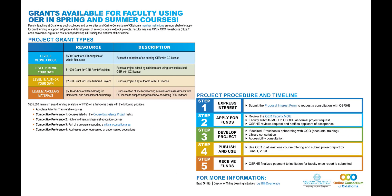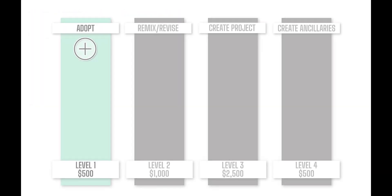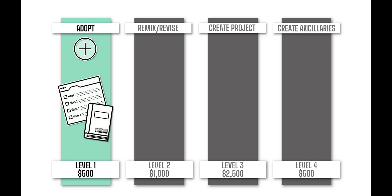There are four types of grants and you can even apply for more than one. Level 1: Adopt an existing CC licensed resource within your course, such as an open textbook, course build, or set of ancillary course materials.